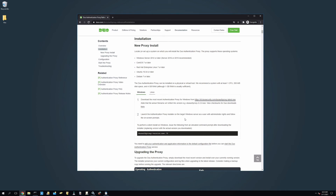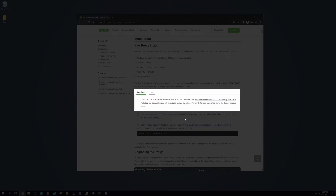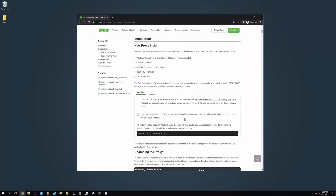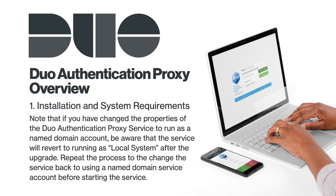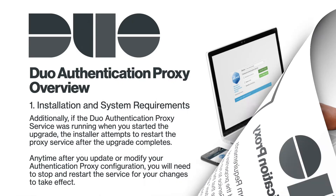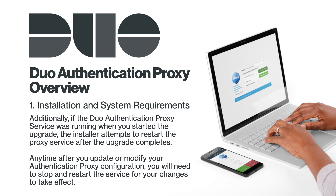The authentication proxy is now ready to be configured, but note that you need to add your authentication and application information to the default configuration file before you can start the Duo Authentication Proxy service. For future upgrades, you can refer back to the reference link to download and run the installer for the latest version. Upgrading the proxy retains the conf and log folders and contents. Note that if you changed the proxy service to run as a named domain account, the service will revert to running as a local system after the upgrade. Repeat the process to change it back before starting the service. Any time you update or modify your configuration, you will need to stop and restart the service for your changes to take effect.